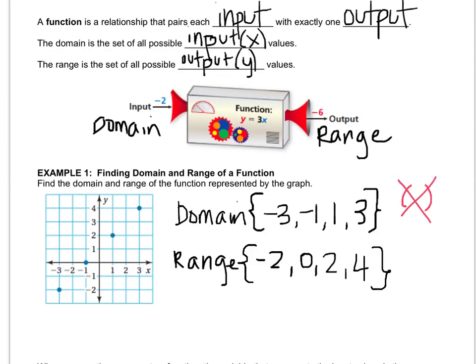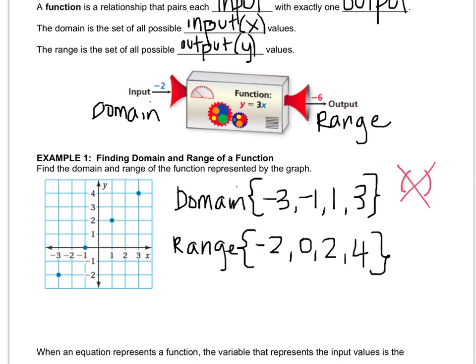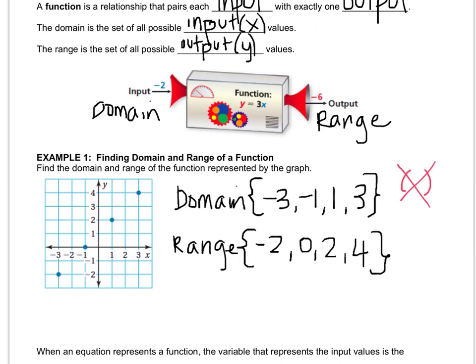And the only way you're going to get better is by practicing. So don't cheat at it. Now one thing I want to mention is if any of these numbers repeated, we would only write it once. So for example, if 2 showed up twice, I wouldn't write negative 2, 0, 2, 2, 4. I would just write it once.